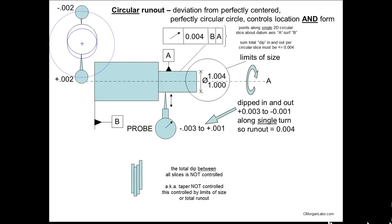Here's another example of circular runout. You have a part with two cylinders, and you want to keep them concentric and circular. So you have a callout that looks something like this: the runout — you want it to be four mils with respect to surface A and datum axis B. Basically, you want to center it on some type of plate and then hold on to it and rotate the part.